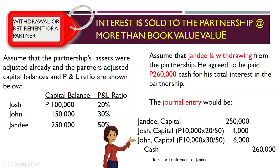To summarize, the various scenarios discussed cover the withdrawal or retirement of a partner where the interest is sold to: the outside party; the remaining partners; and the partnership itself. For the last scenario, sub-cases include payment equal to book value, lesser than book value, and more than book value.